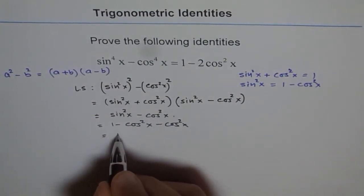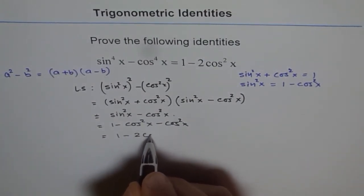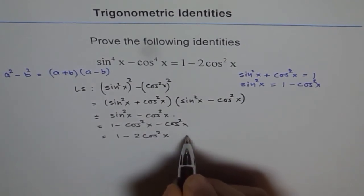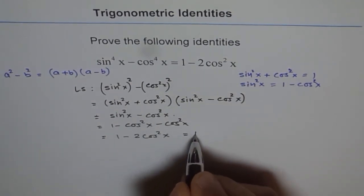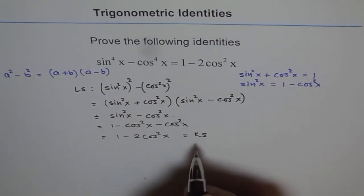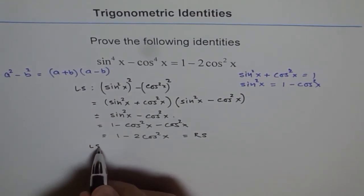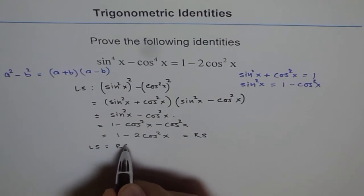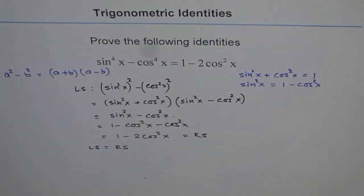Now, this is 1 - 2cos^2x, which is same as our right side. So we started with left side and we got our right side. Therefore, the identity has been proven. Thank you.